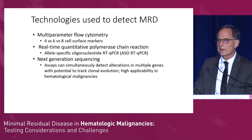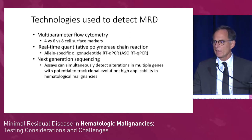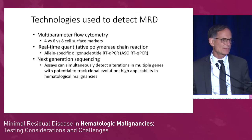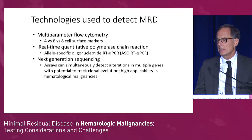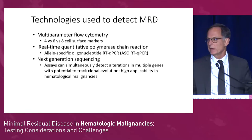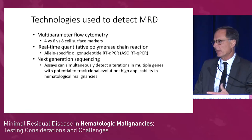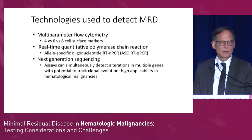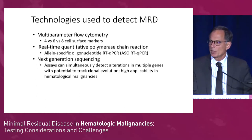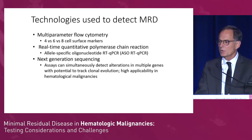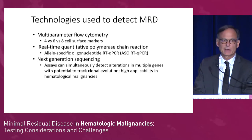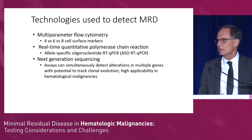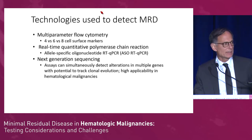Flow cytometry has been nicely simplified in CLL and can be easily performed in most clinical laboratories. Real-time PCR, while discussed in ALL, is really not practical for routine clinical practice — it's very expensive and laborious. You're not going to get real-time results, usually. And then, of course, there's next-generation sequencing, which lends itself quite nicely to lymphoid disease, including CLL.